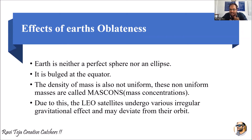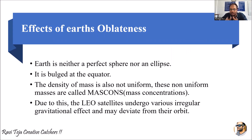Due to this, the LEO satellites — the satellites which are moving in orbit very close to the Earth, which we have already seen as LEO, MEO, GEO — these low Earth orbit satellites undergo various irregular gravitational effects and may deviate from their orbit. Especially LEO satellites, which are very close to the Earth, undergo various irregular gravitational effects with respect to time and there might be a chance of deviation from their path or orbit. This is the effect of Earth's oblateness.